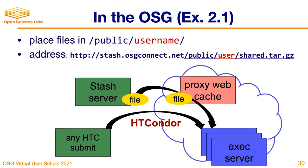On OSG Connect, you put the files into the special directory under public and your username, and the address will be translated into an HTTP address. The file will be available under public, your username, and then the name of the file. This is covered in Exercise 2.1.